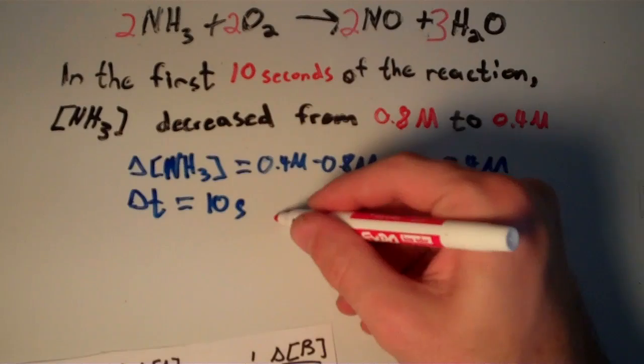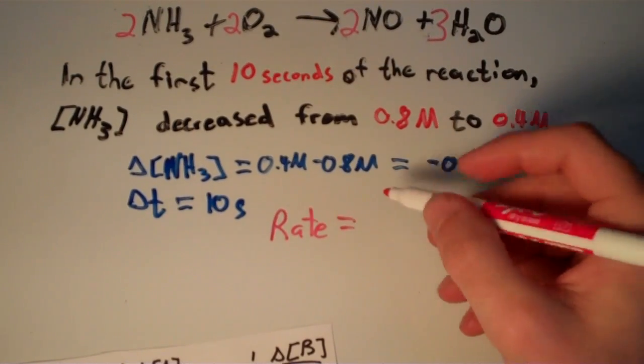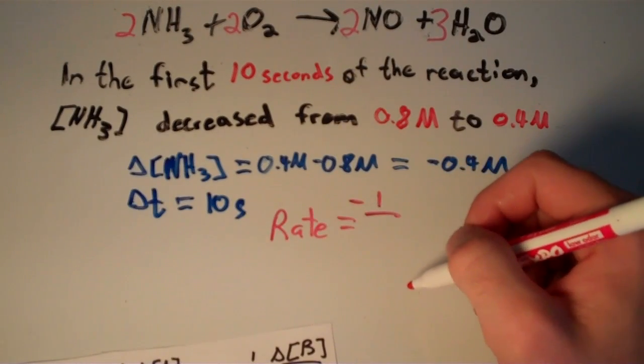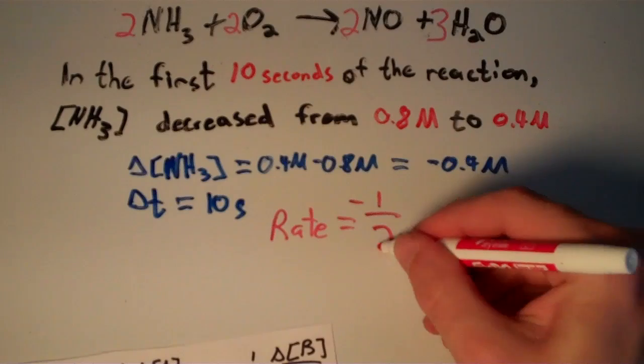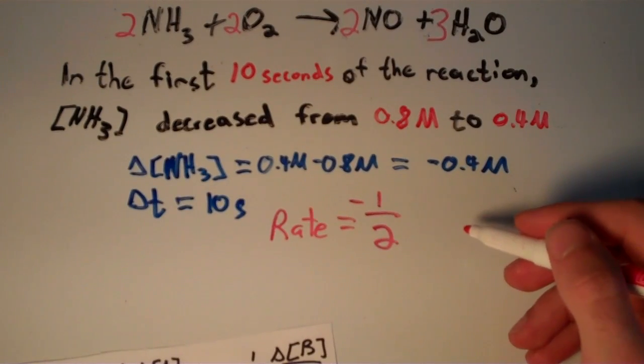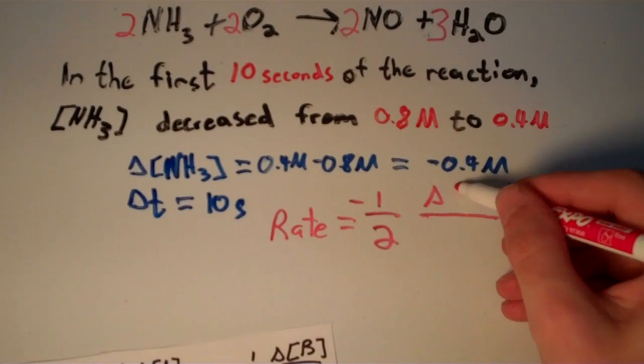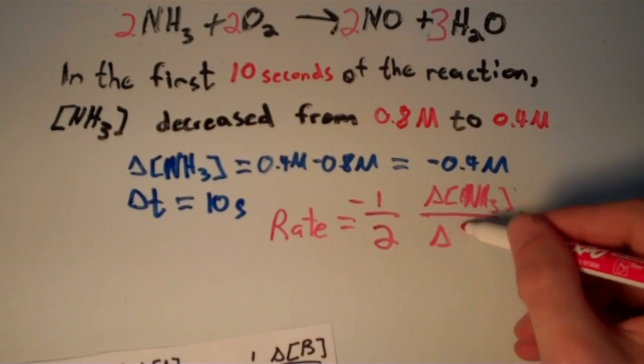So now all we have to do to solve for the rate is we take the negative of 1 over the coefficient that is in front of NH3, which in this case is 2. And we're going to multiply that times delta concentration of NH3 over delta T.